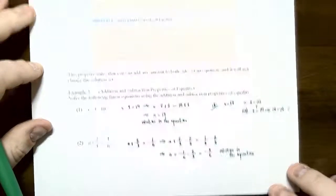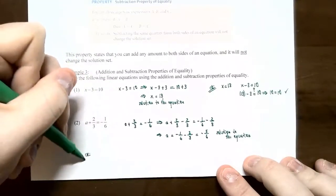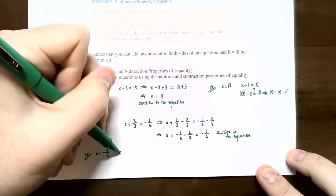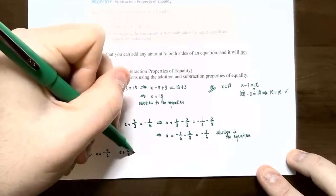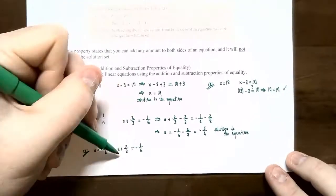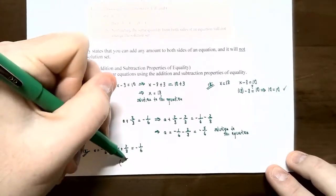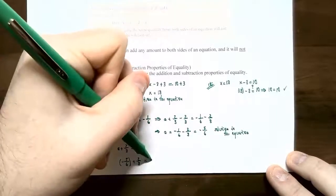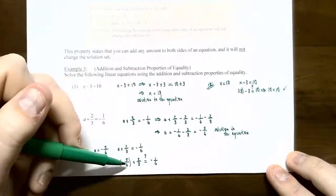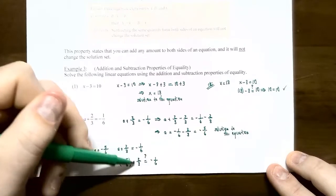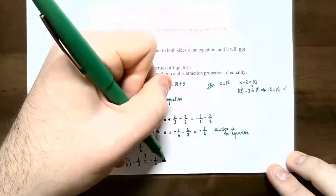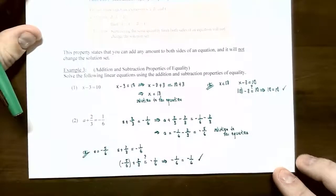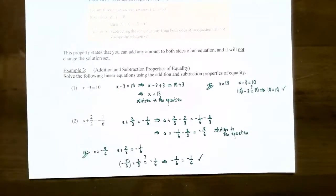Now we can check the answer. Check that A equals negative five-sixths is correct for A plus two-thirds equals negative one-sixth. Replace A with negative five-sixths: negative five-sixths plus two-thirds. Converting to sixths: negative five-sixths plus four-sixths equals negative one-sixth. The left side equals negative one-sixth, which equals the right side — that is a true statement. So A equals negative five-sixths is the solution.